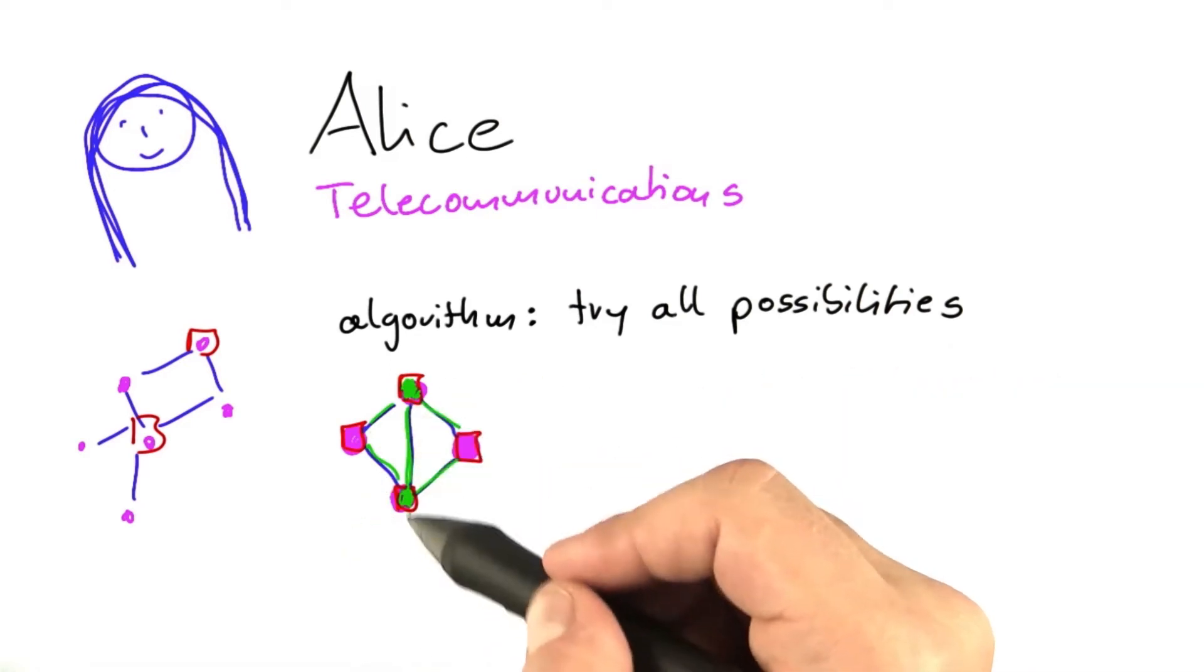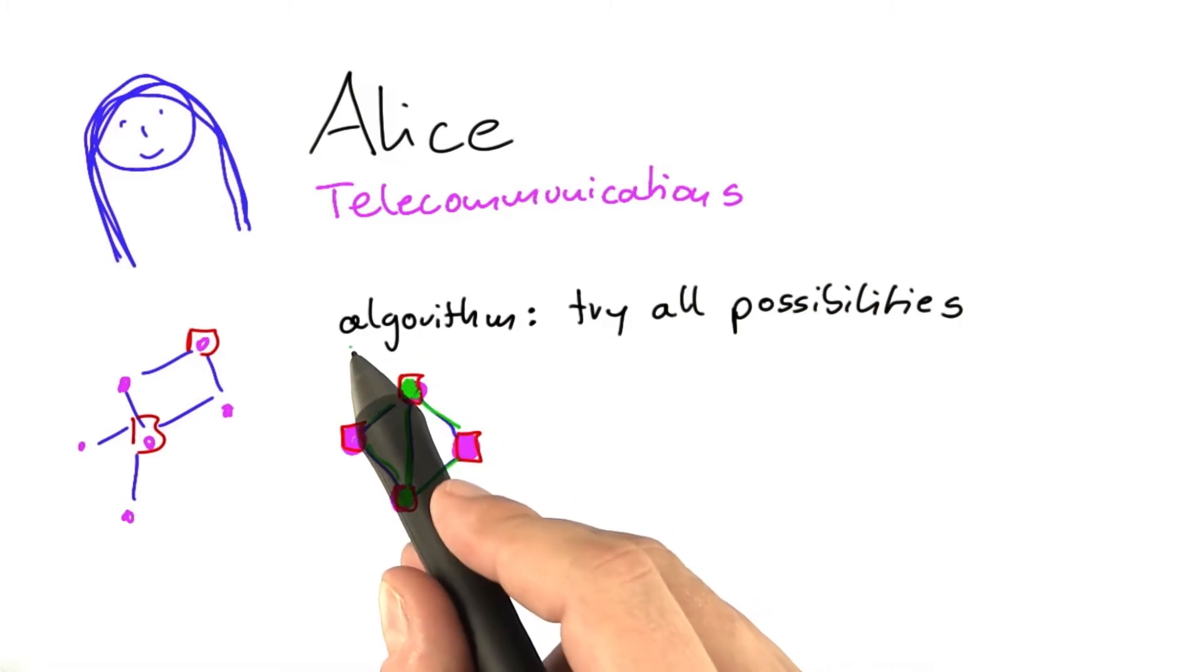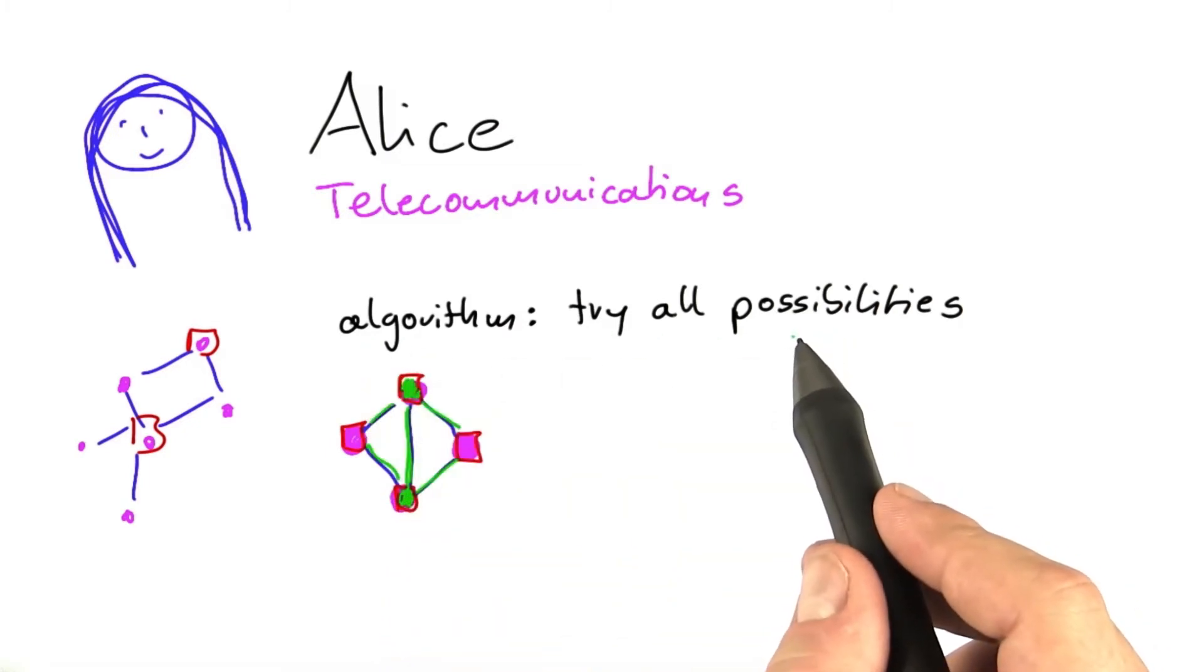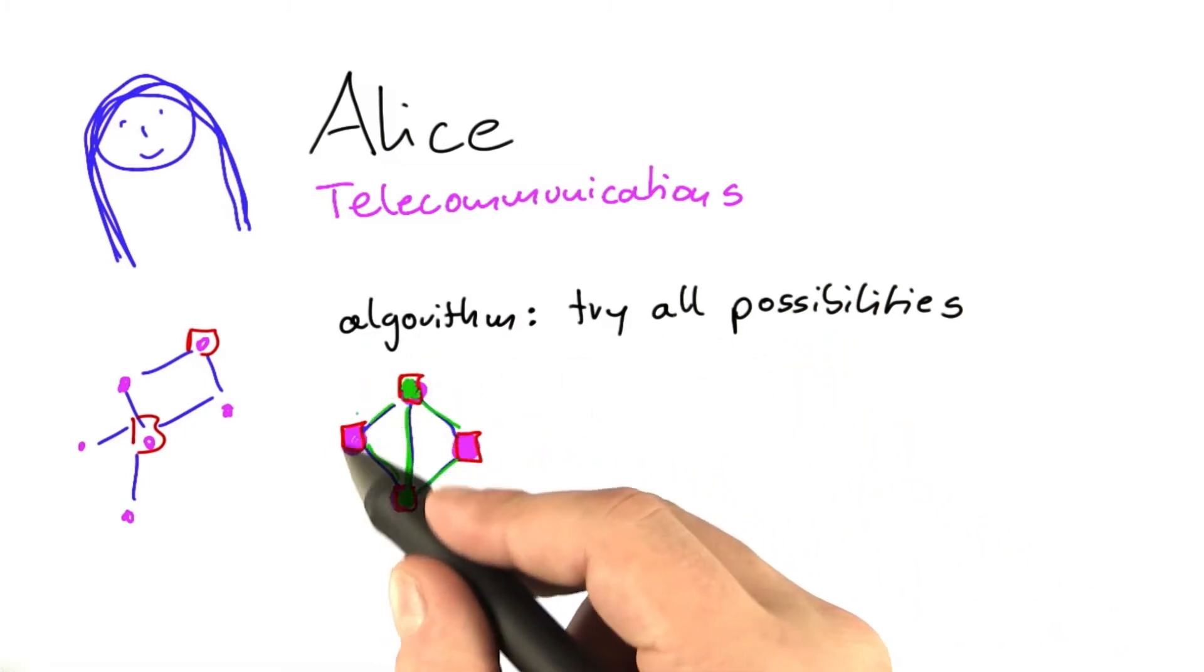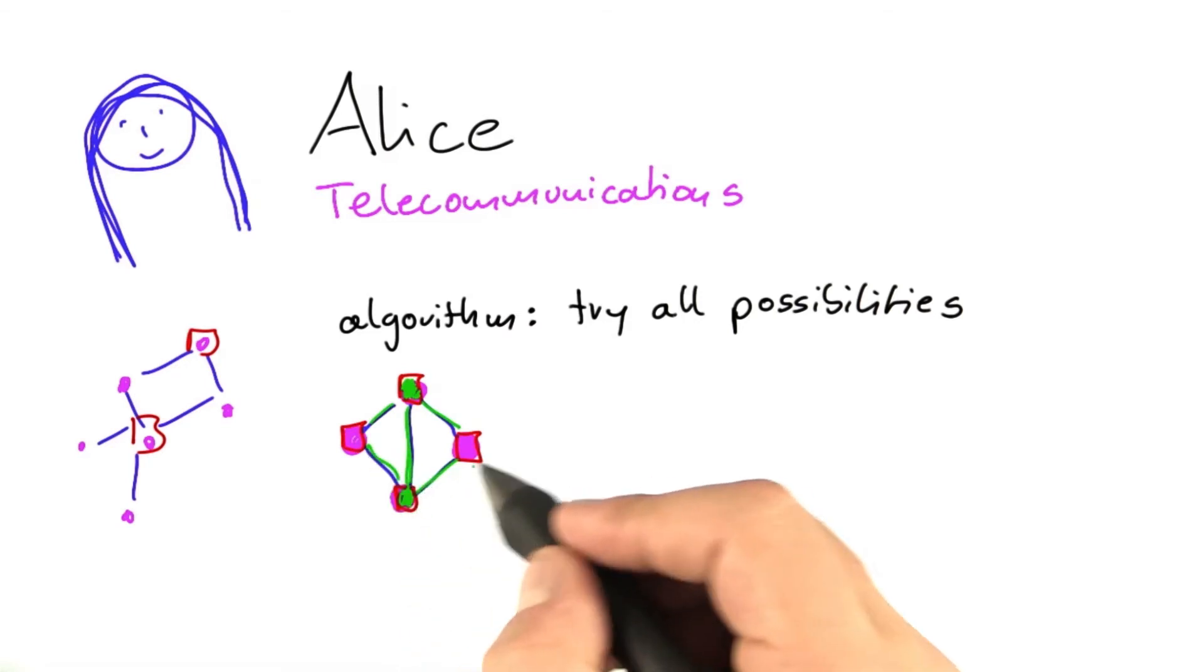But of course, a computer can't just see that two devices suffice. So Alice's algorithm trying all possibilities would have to go through all of the possibilities that you could have of installing a device at a certain communication point or not installing one.